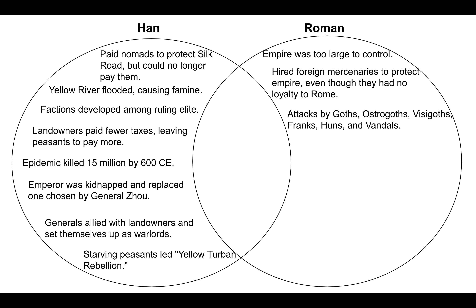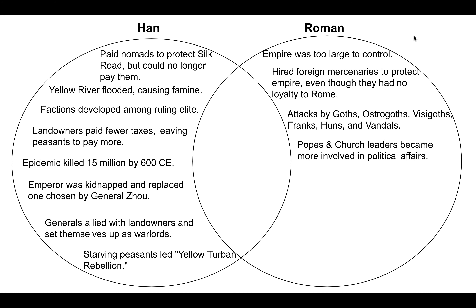You've got all of these nomadic invaders — like the Goths, the Ostrogoths, the Visigoths, the Franks, the Huns, and the Vandals — and the western part of the Roman Empire could not force these invaders out. So they are going to fall to these invaders.